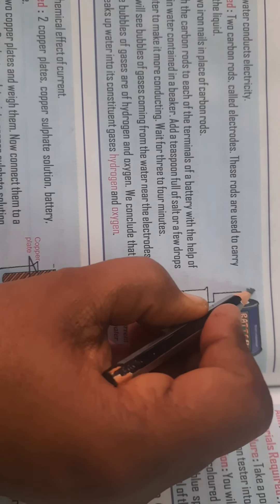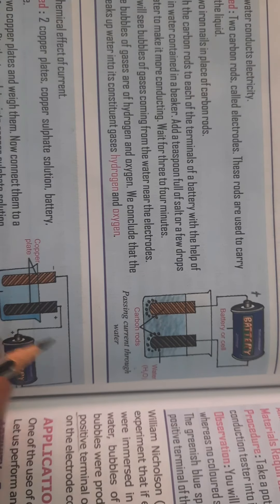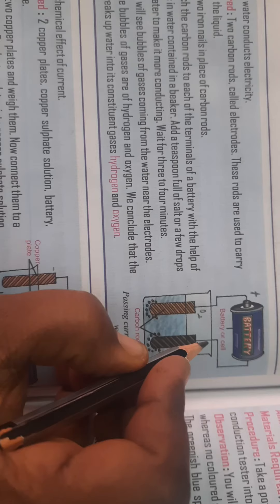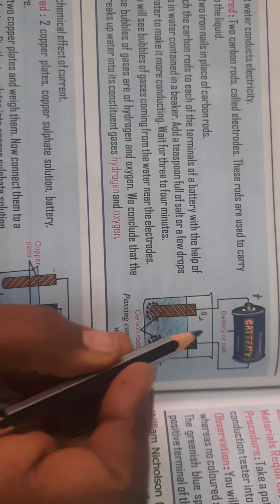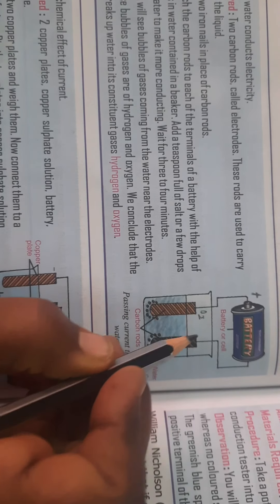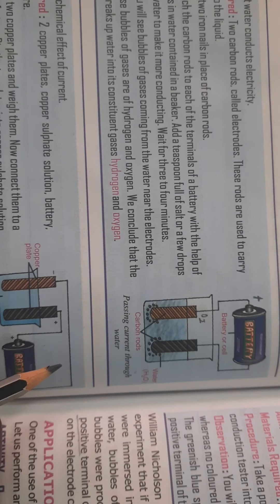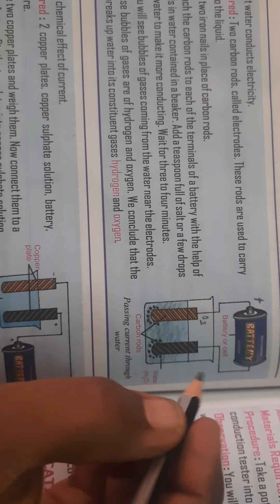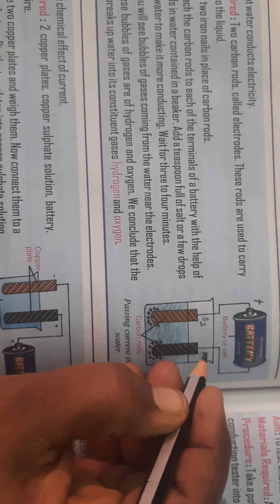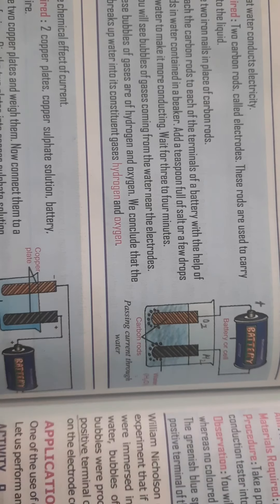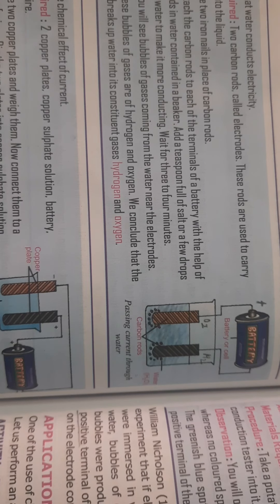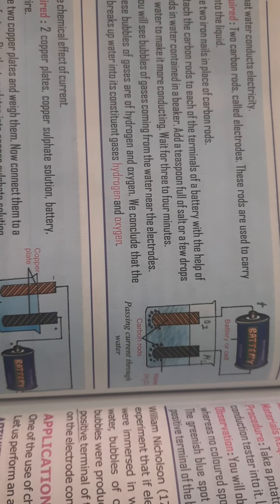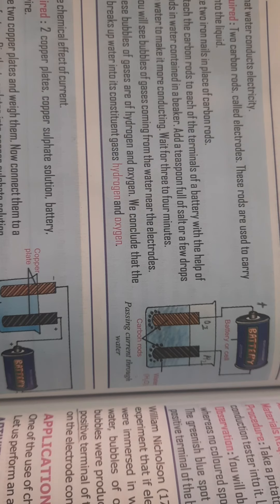Which gas will evolve from the positive terminal? Oxygen gas will evolve from the electrode at the positive terminal, and from the negative terminal the hydrogen bubbles will start evolving. So the positive terminal will evolve oxygen and the negative terminal will evolve hydrogen.